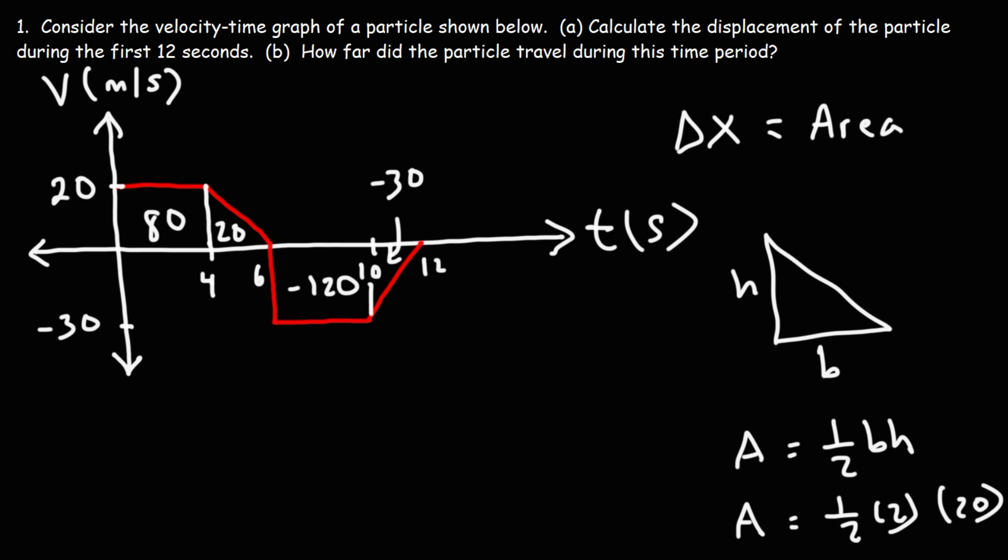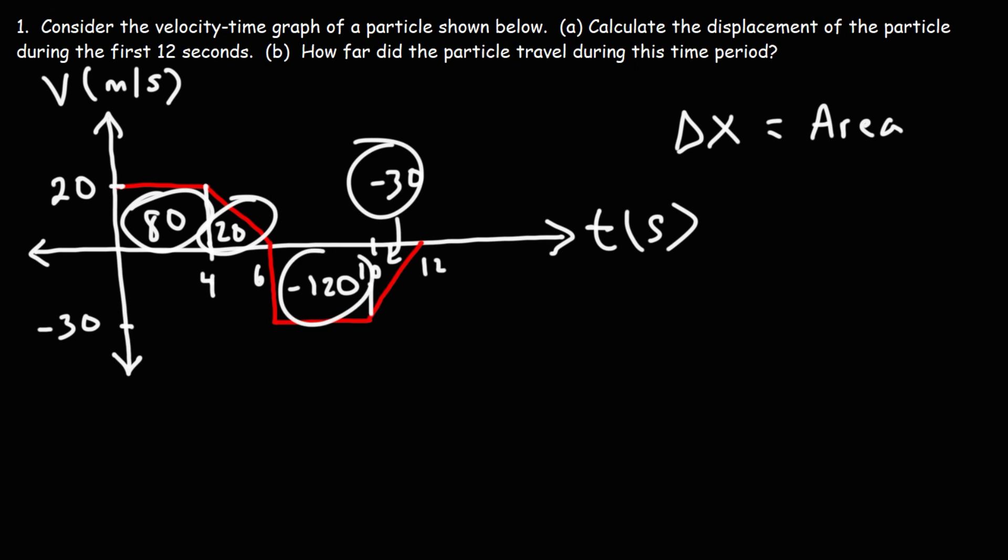Now in order to calculate the displacement during the first 12 seconds, we simply need to add these values. Now displacement is a vector, so it can be positive or negative. So we're going to add up those 4 values. The displacement is going to be 80 plus 20 plus negative 120, and then plus negative 30.